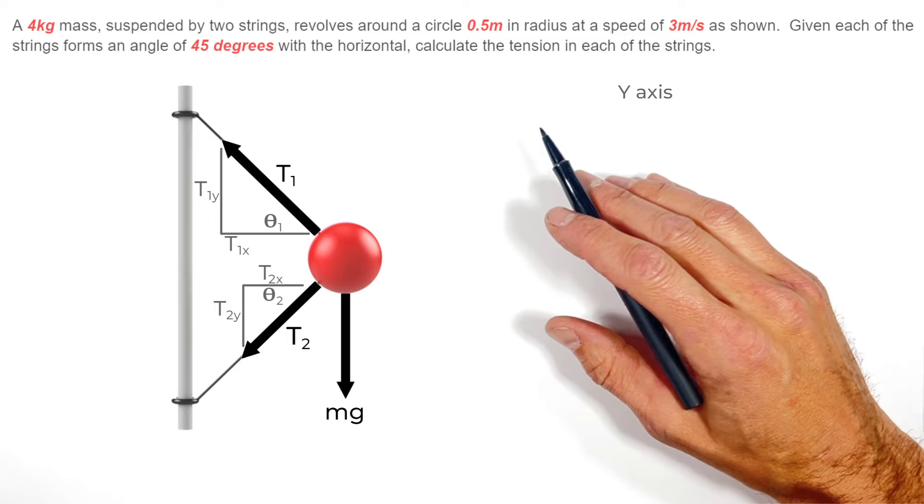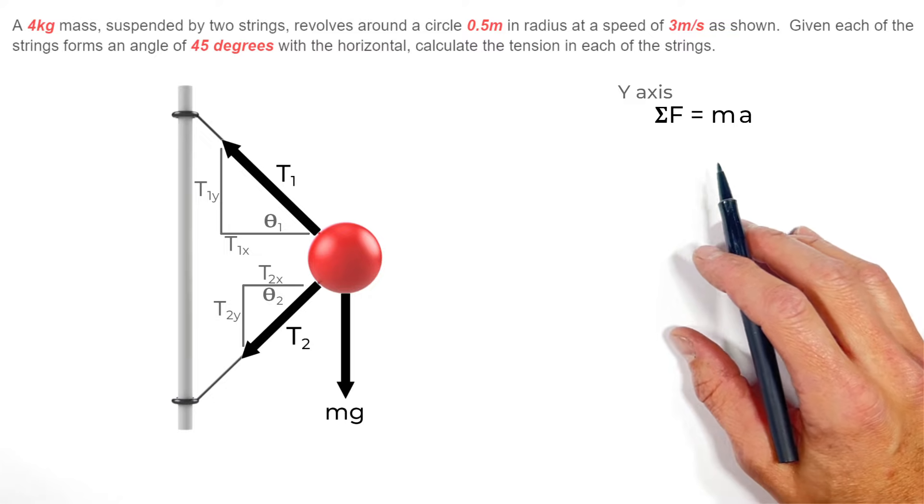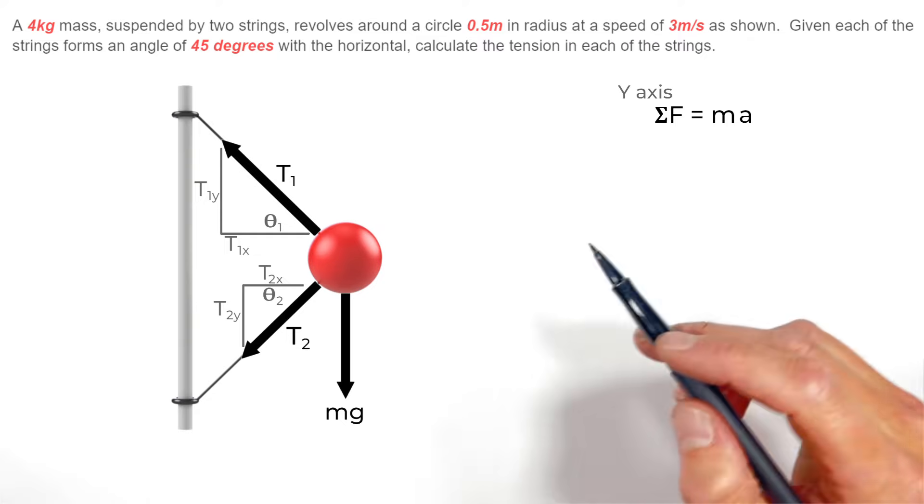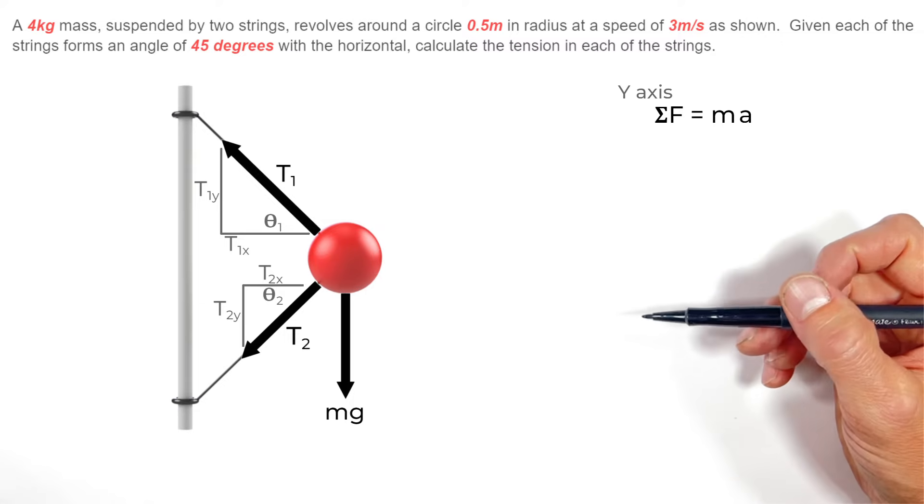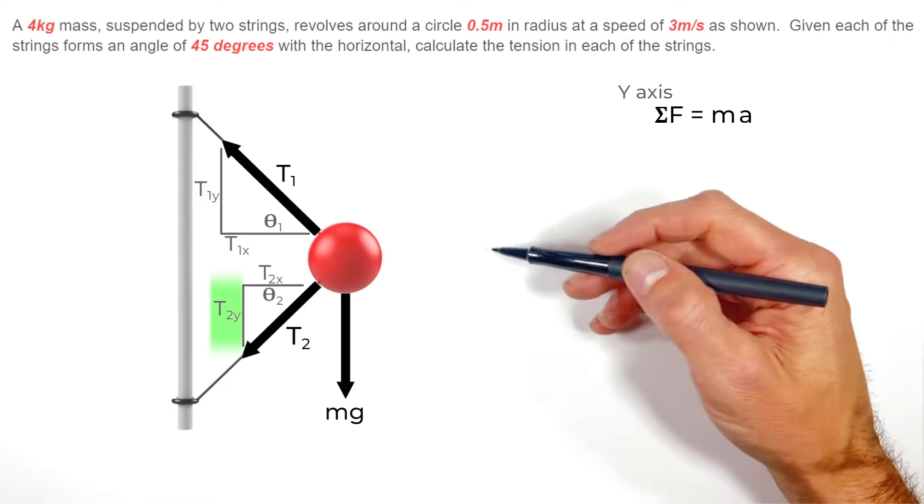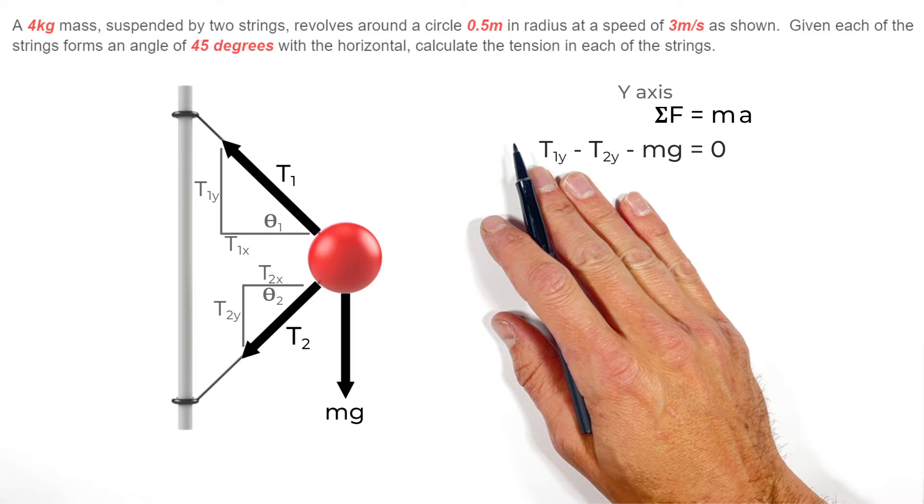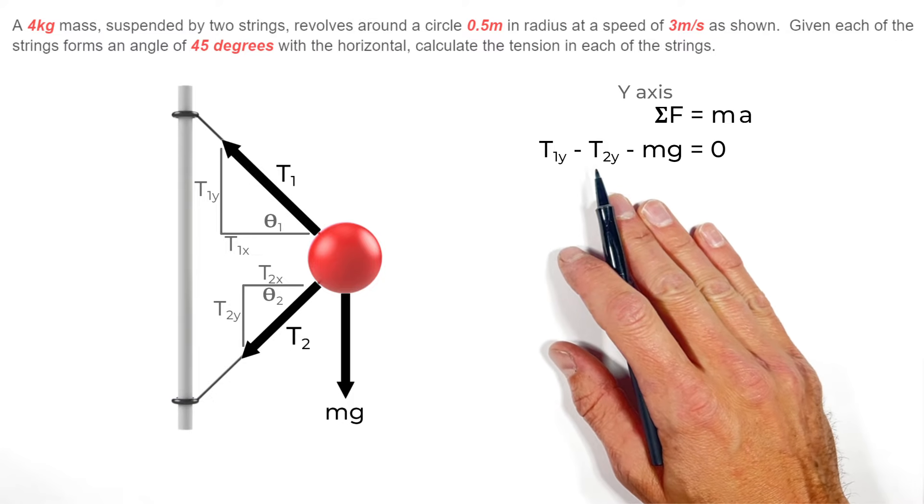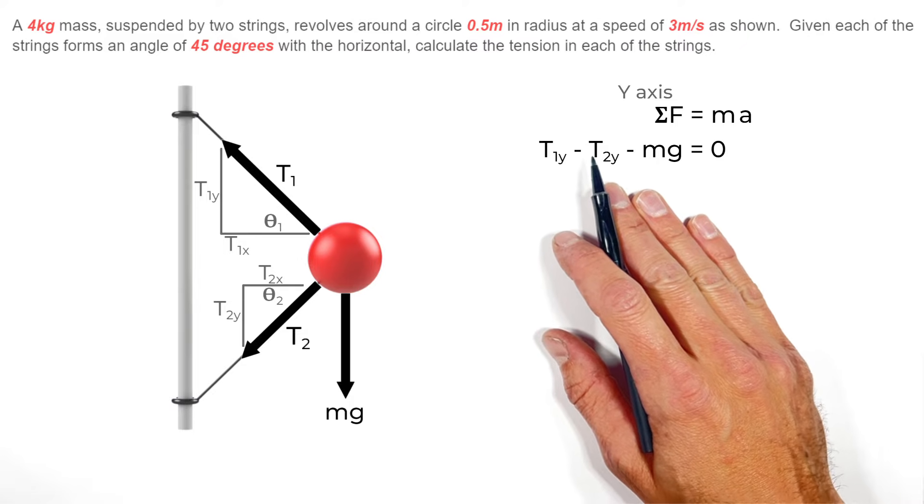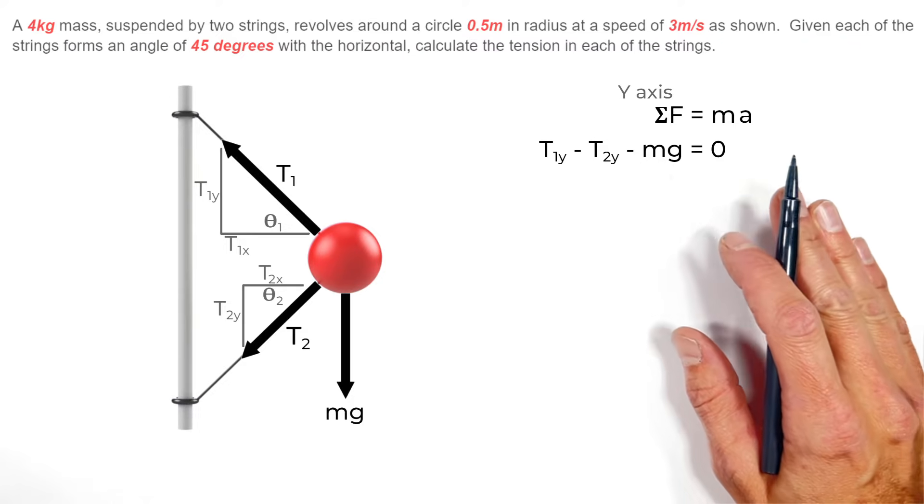You see, if we look at the y axis first, the sum of all forces in the y axis needs to equal zero. That is to say the ball is not going to accelerate vertically, it's only going in a horizontal circle. Now vertically, we have three different forces or components of forces: the vertical component of T1, the vertical component of T2, and gravity downward. So putting those together we've got T1y upward in the positive direction, minus T2y downward in the negative direction, and then of course we have gravity downward so minus mg, and the sum of those three forces adds up to zero.